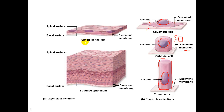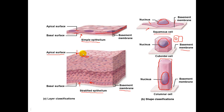Here are examples of the difference between simple and stratified epithelium. In simple epithelium, we have the basal membrane, the basal surface of the cell, and one cell layer up to the apical surface. In stratified epithelium, notice the basement membrane with basal and apical surfaces, but the shape of the cells changes — in a stratified squamous, the lower cells appear more cube-like, while at the top we see the flattened, pinched-off cells characteristic of squamous cells at the apical surface.